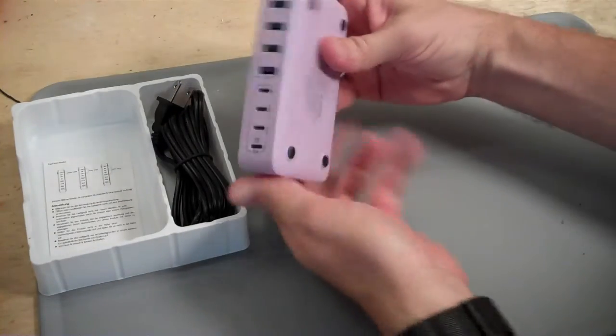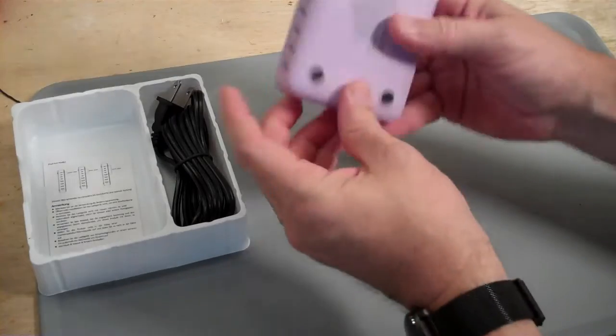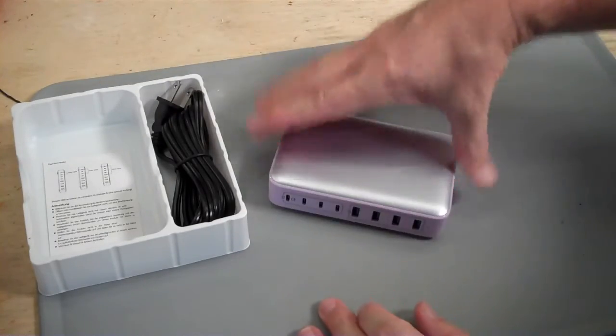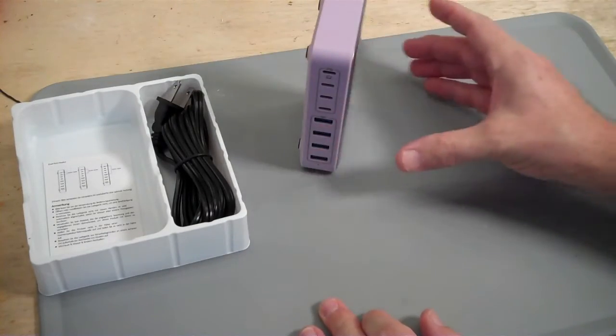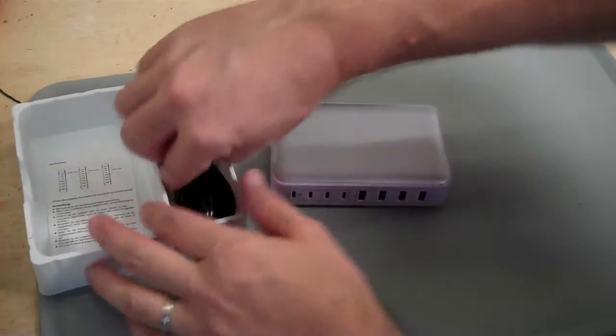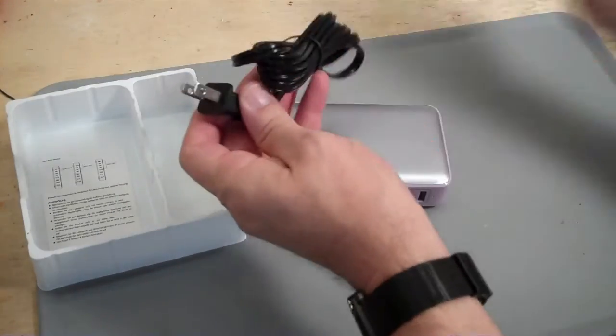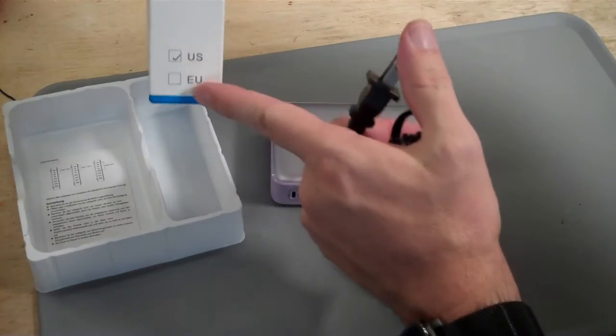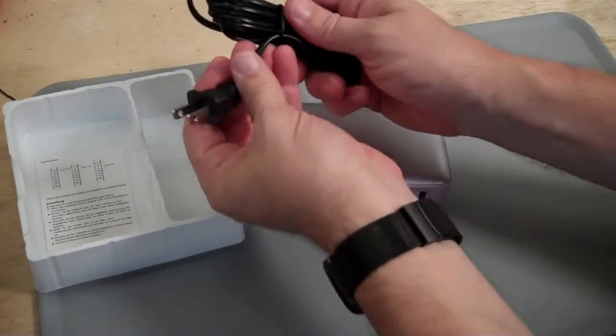In the box, you get the charging brick itself. It has feet down here, so it can sit this way. You could potentially also sit it up that way, although then the feet in the bottom panel would show. It includes the U.S. adapter. They also sell an EU version, which presumably comes with an EU adapter.